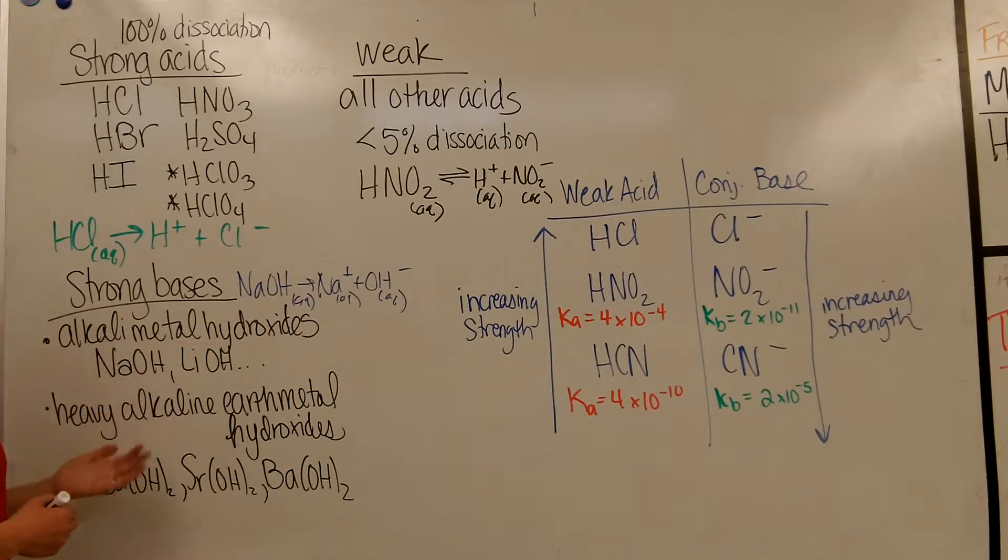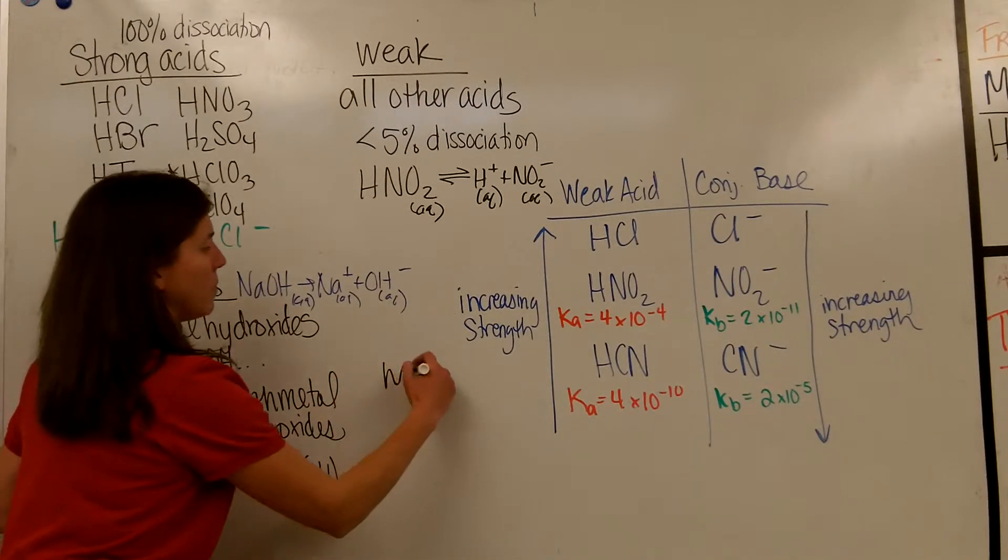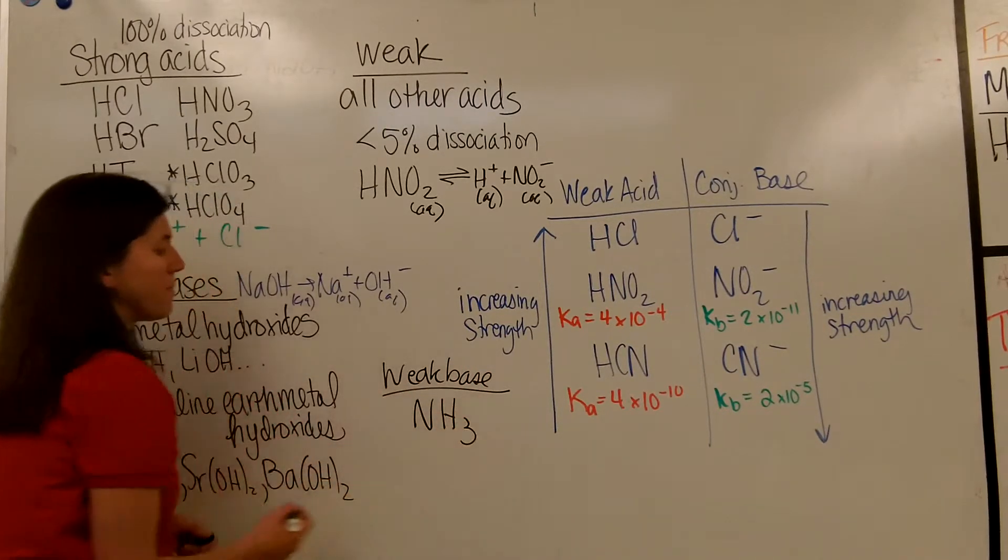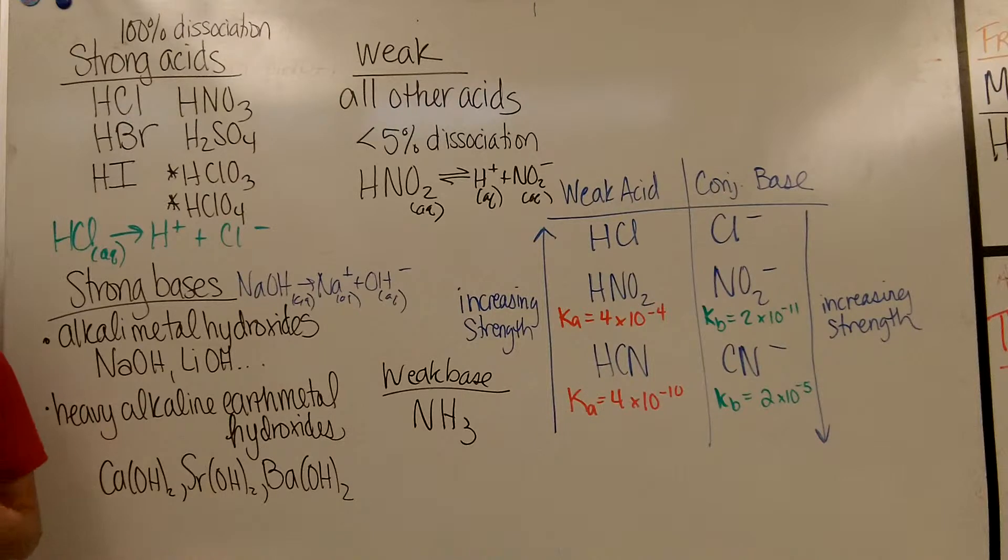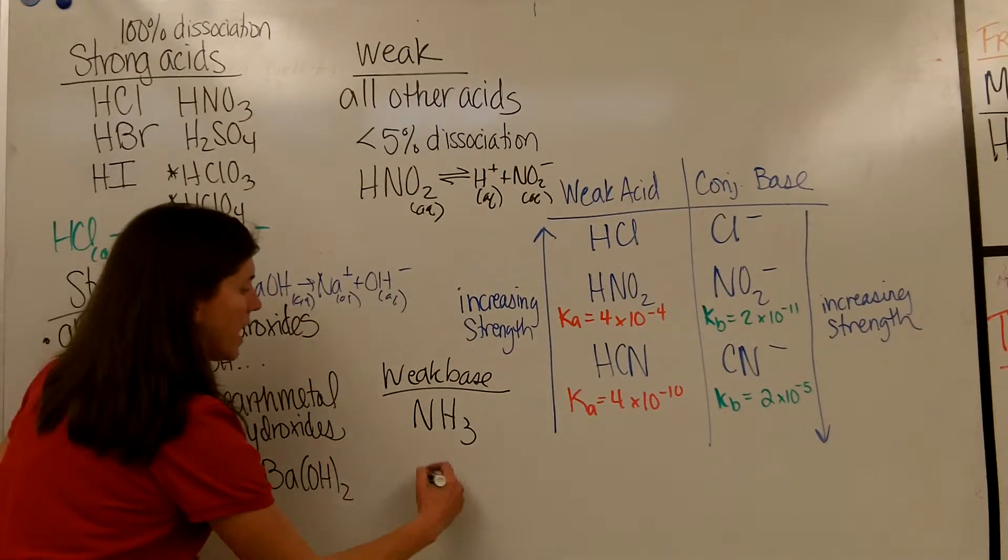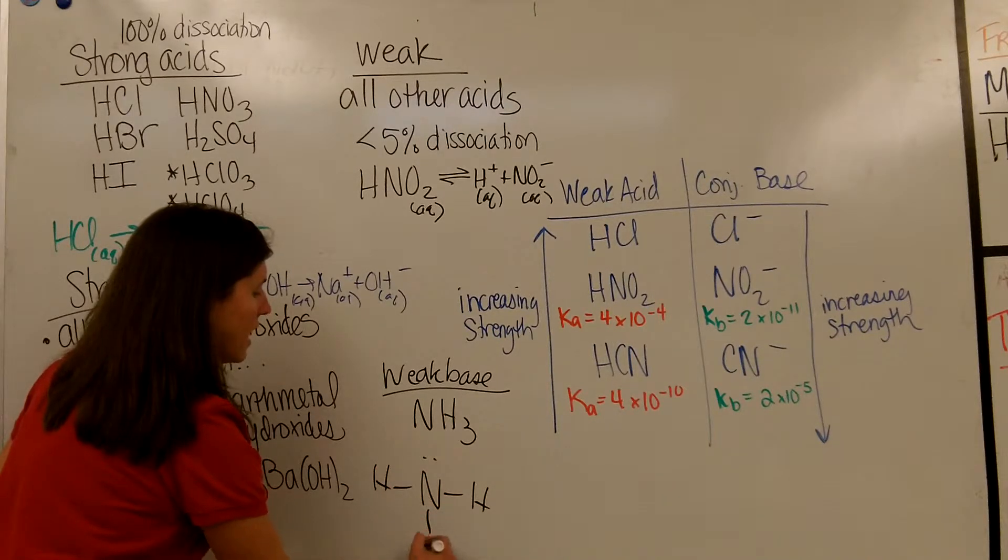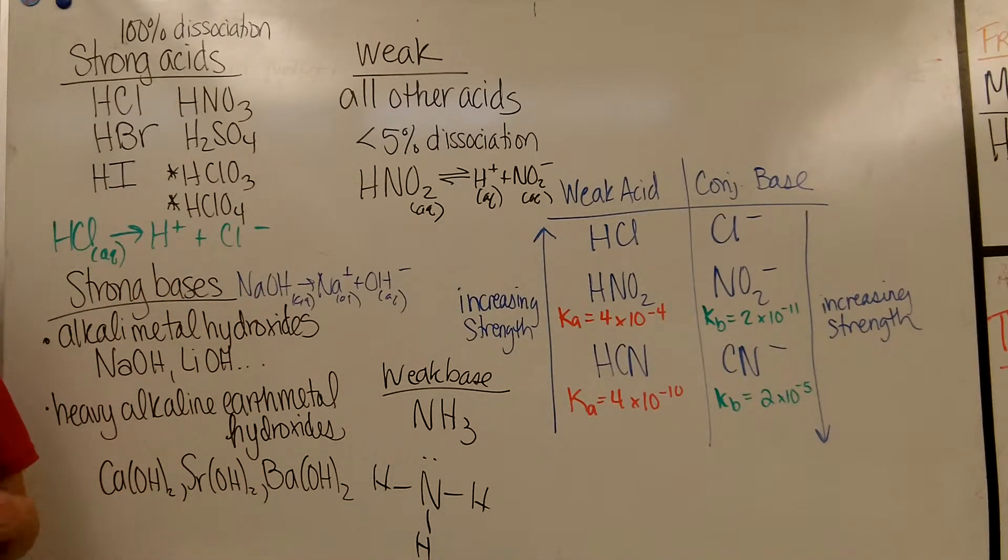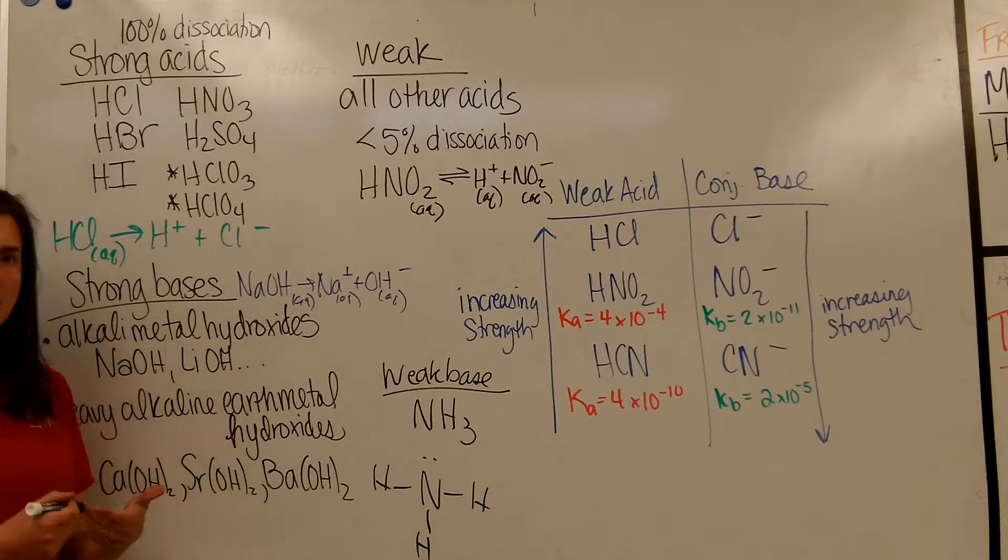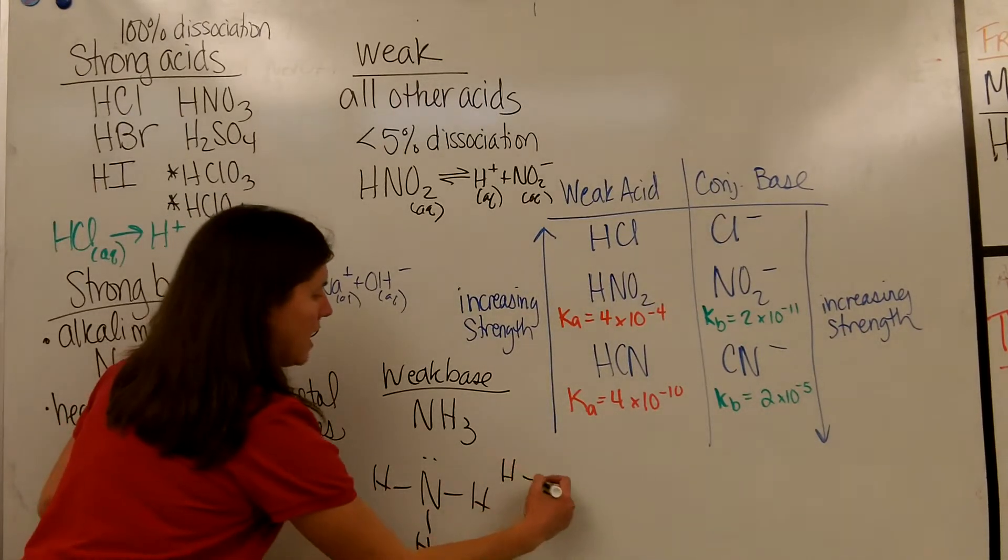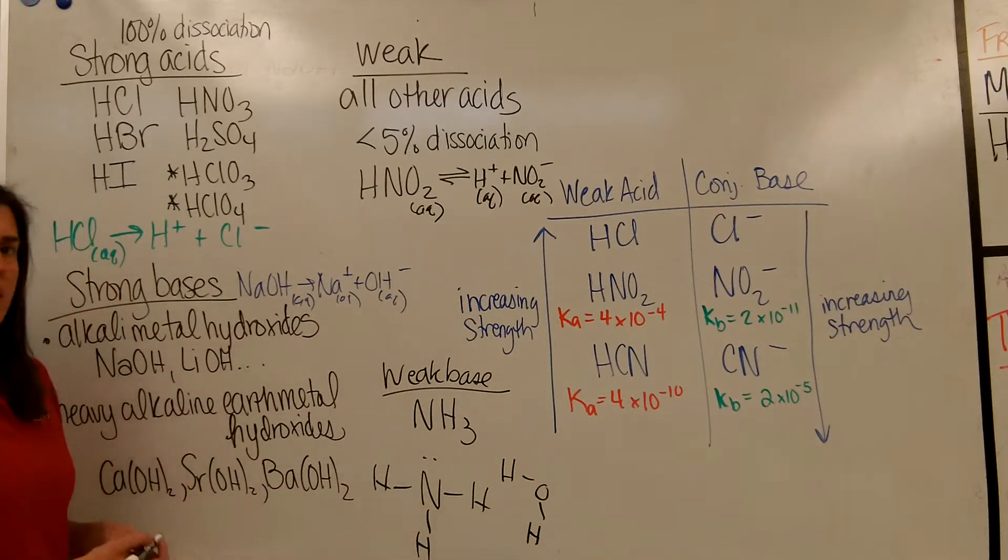And an example of weak bases, a common example of a weak base would be NH3. So a lot of these nitrogen compounds can act as weak bases, and if you look at the Lewis-Dot structure, the way that these act as weak bases is because of this lone pair right here, tends to be attractive to the hydrogen on water.